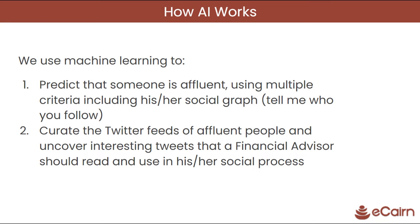So how AI works — it's simple. AI does two things. First, it predicts that someone is affluent. It uses many criteria to tell the affluence of an individual and the level of affluency. And then the second thing it does, it creates and aggregates their Twitter feed so you can uncover interesting tweets that a financial advisor or anyone using eCairn should use to build relationships.